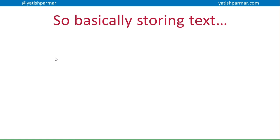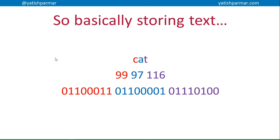So when we're storing text, say I want to store the word 'cat'. According to ASCII, it has the following codes: lowercase c is 99, lowercase a is 97, and lowercase t is 116. Therefore that can be stored in the corresponding binary. That's basically how we're storing text on a computer system.